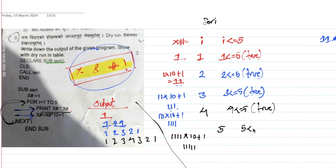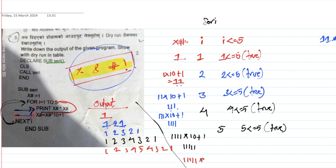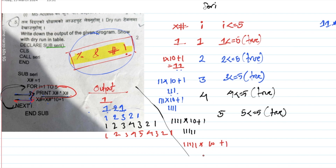5 is less than or equal to 5 — True! We multiply. 5 into 1, the value is 1, 2, 3, 4, 5. Then 5 into 1 multiplied by 10 plus 1 gives 6. Now i equals 6. 6 is less than or equal to 5 — False! The for loop ends.